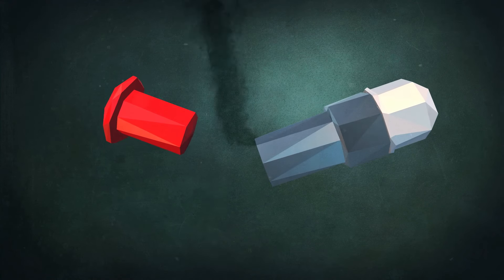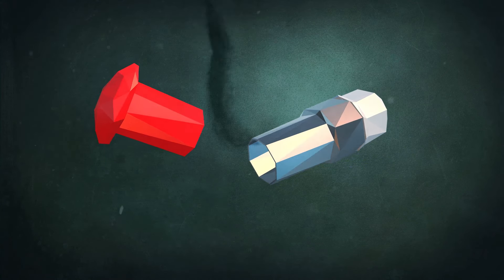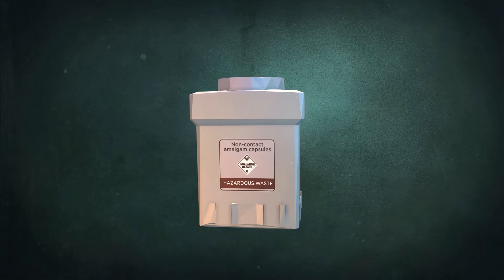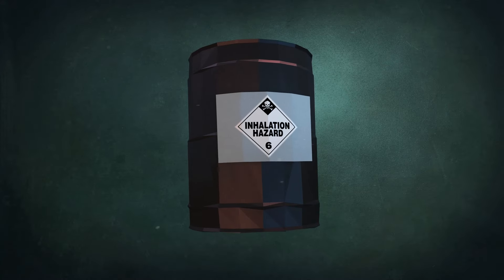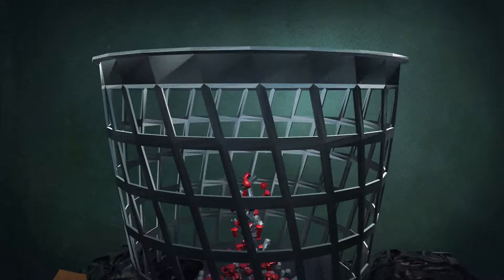Mercury vapor is released upon opening the capsule. The used amalgam capsule still contains a small amount of mercury, so the ADA recommends the capsules be stored in an airtight container and collected by a hazardous waste company. Unfortunately, the majority of dentists toss the capsules into the trash.